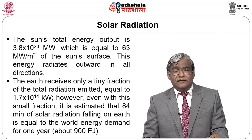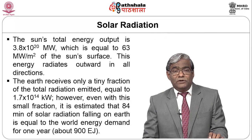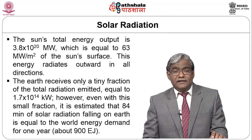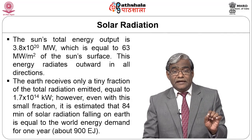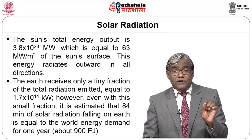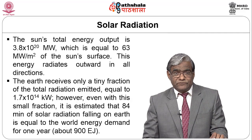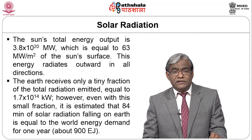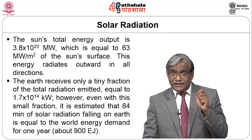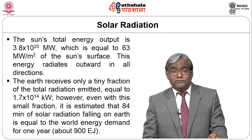This energy radiates outward in all directions, and the earth receives only a tiny fraction of the total radiation emitted — equal to 1.7 × 10¹⁴ kilowatts. Even with this small fraction, it is estimated that 84 minutes of solar radiation falling on earth equals the world energy demand for one year, about 900 exajoules. Even storing a small fraction for just 84 minutes could supply world energy demand for the entire year.